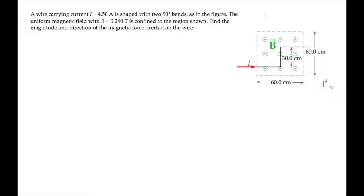This problem asks us to find the force on the current carrying wire in the figure. That force is equal to the current I times the length vector crossed into the magnetic field vector.